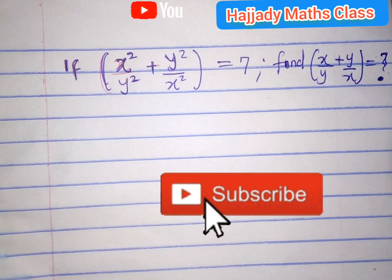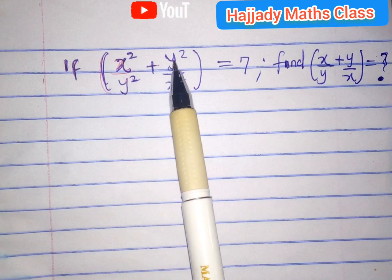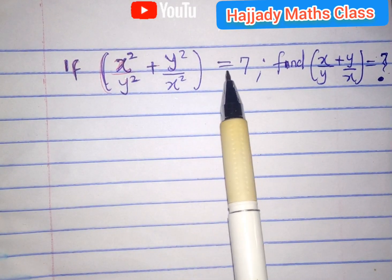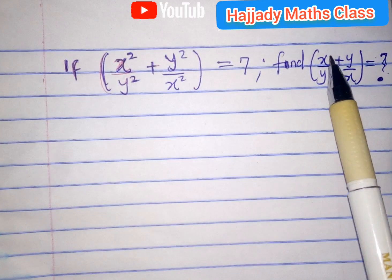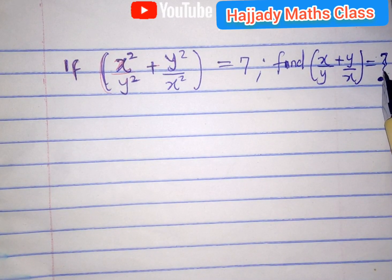Now, looking at this question, it says that if x squared over y squared plus y squared over x squared equals 7, find x over y plus y over x. So what is the value? This is unknown.